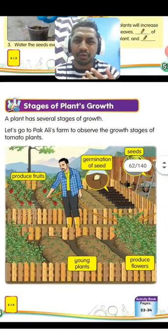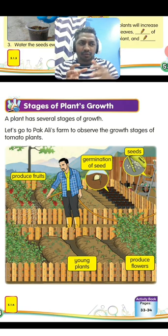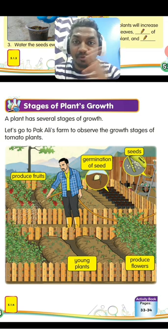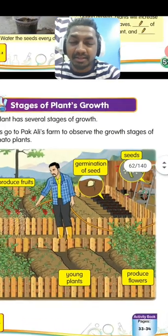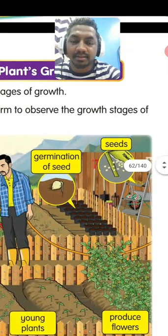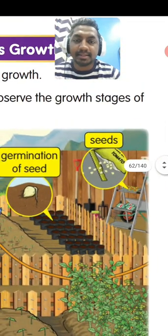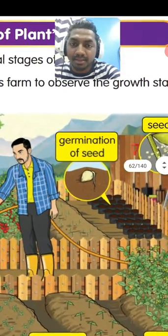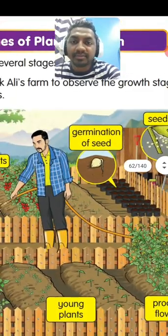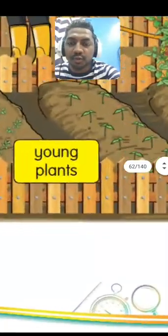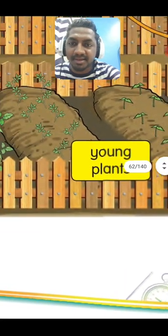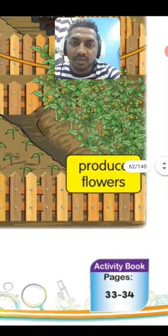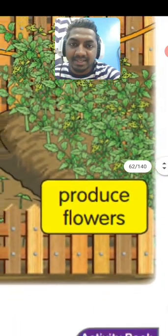Just like humans go from baby to child, child to adult, and then become old, the same goes for plants - but in different terms. The basic start of a plant comes from seeds. From the seed, it will germinate - we call this the germination of the seed. Once the seed is germinated, it will grow into a young plant. Look at the young plant here - it already has leaves.